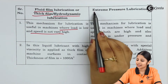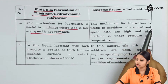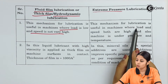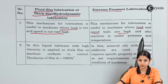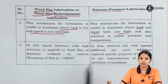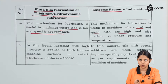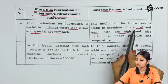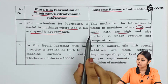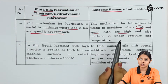The next is extreme pressure lubrication. This mechanism is useful for machines where both the load and the speed are high. Here we do not make films — we spray the lubricants onto the surfaces. These lubricants are specially used for machines under extreme pressure, extreme load, high speed, and also high temperature.